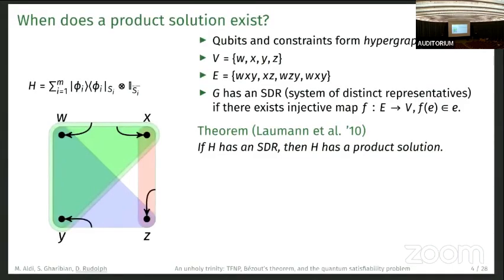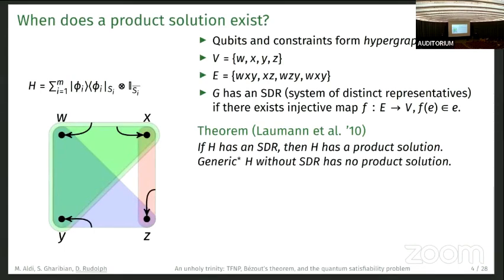A theorem by Laumann and others says, if H has an SDR, then H has a product solution. A generic instance H without an SDR has no product solution.